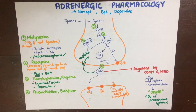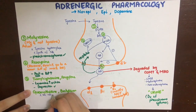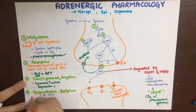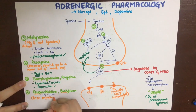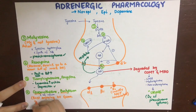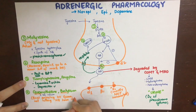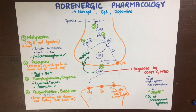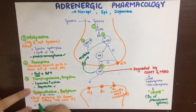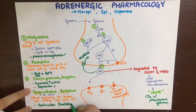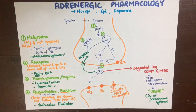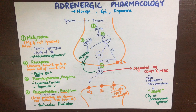Lastly, guanethidine and bretylium act at site number four by blocking the release of noradrenaline. They are used in ventricular fibrillation management. A mnemonic: 'Brett is enjoying his garba but not letting norepinephrine go out.' That covers the introduction to adrenergic pharmacology; next we'll look at drugs acting on alpha, beta, and dopamine receptors.